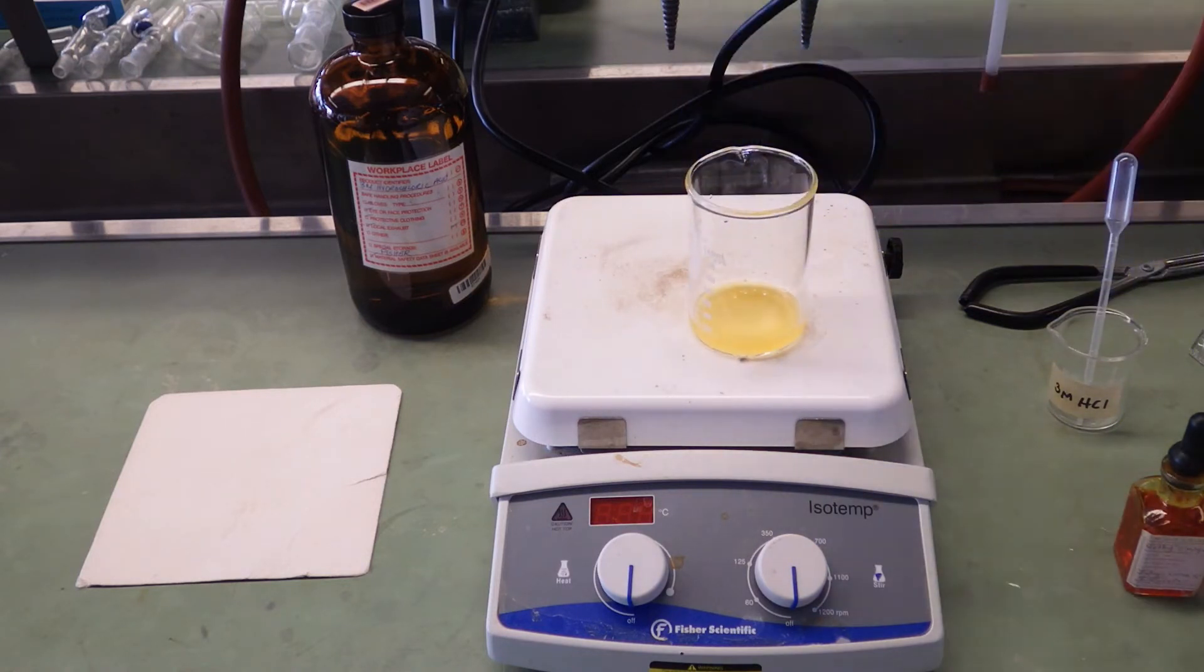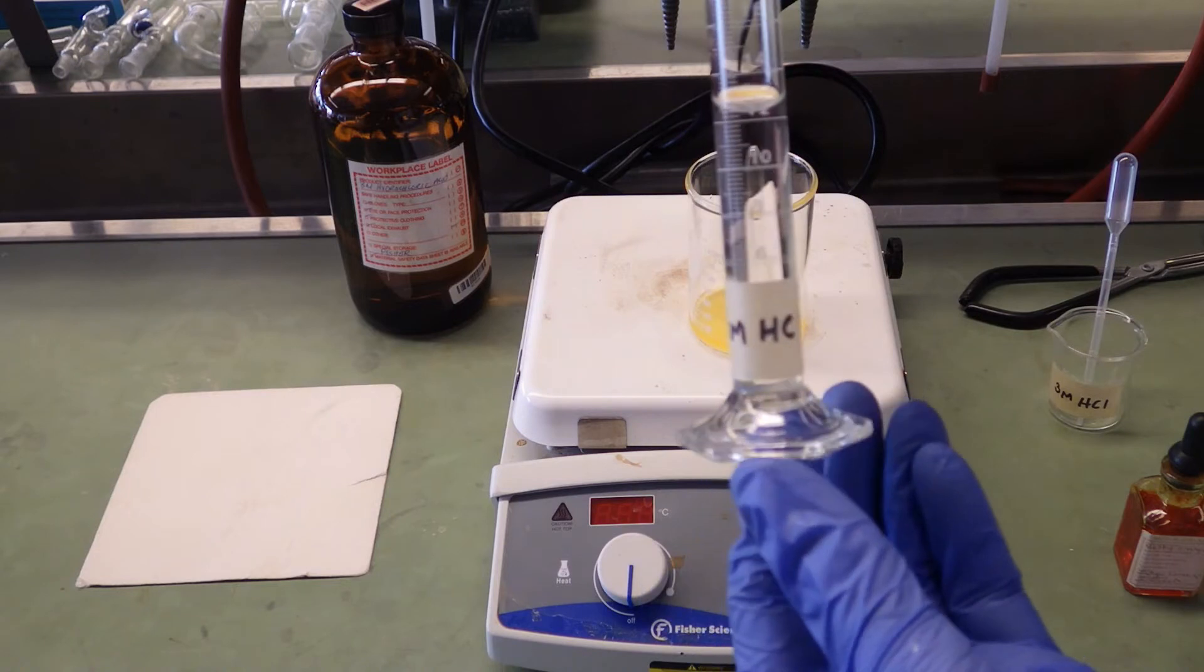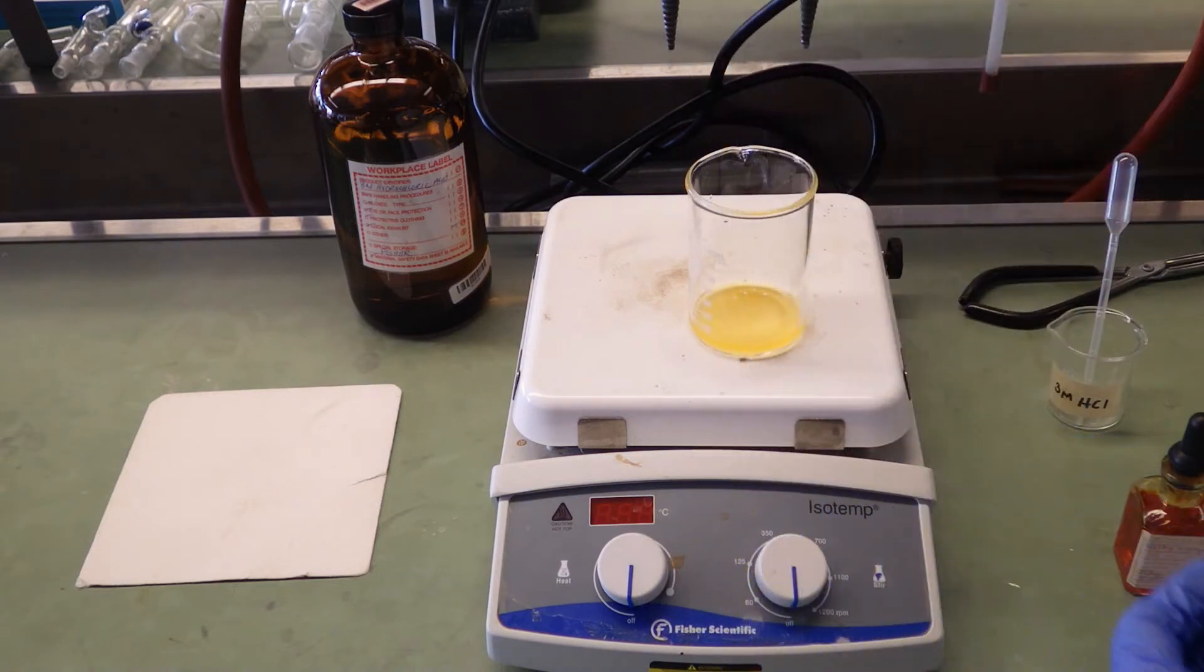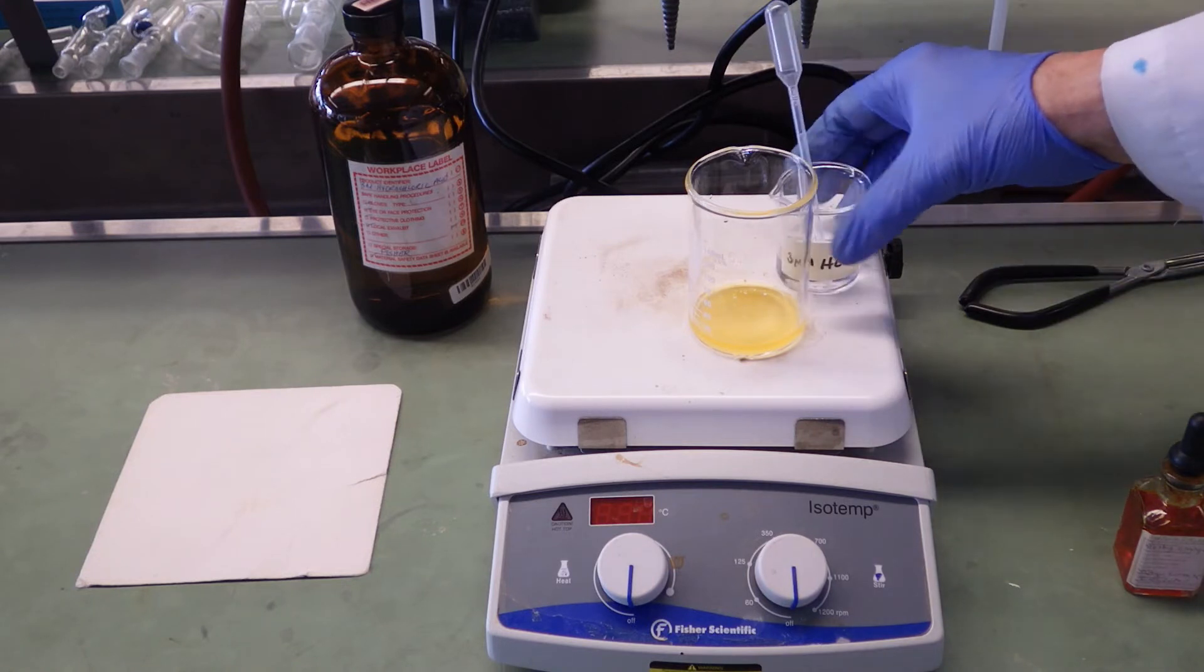There's the yellow color, indicative of a base. Here's 3 molar HCl. I'm going to add 12 mils. It should be in excess, enough to neutralize all the sodium bicarbonate.